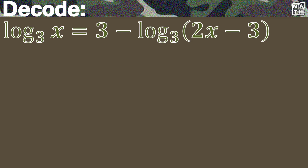Before we start applying laws, properties, and theorems of logarithm in order to solve the value of x, let us try to isolate all logarithms on one side of the equation so that we could apply properties that benefit them later. We are going to add both sides by the logarithm of 2x minus 3 to the base of 3 so that all logarithms will appear on the left-hand side of the equation.